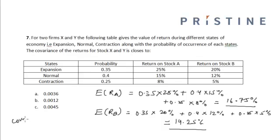Now the covariance is equal to summation of the individual probability of each state PI into return on stock A minus expected return on stock A, multiplied by return on stock B minus expected return on stock B.